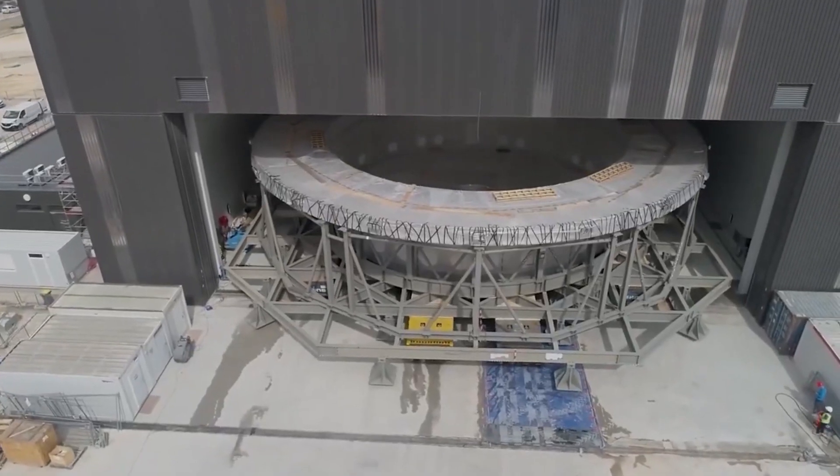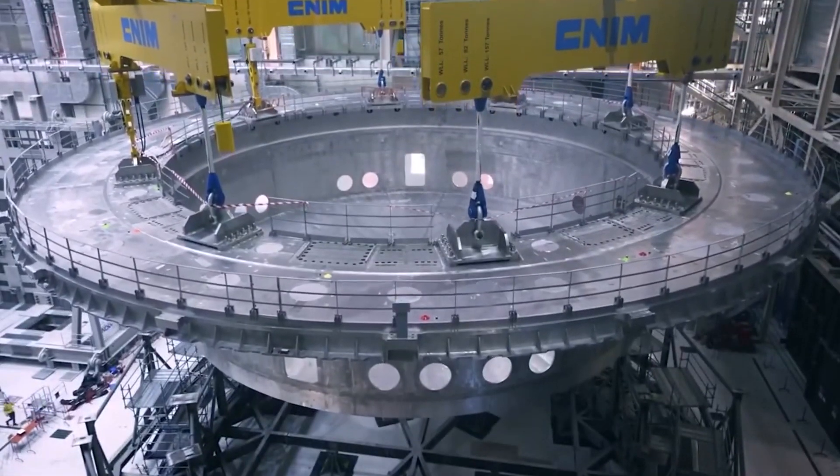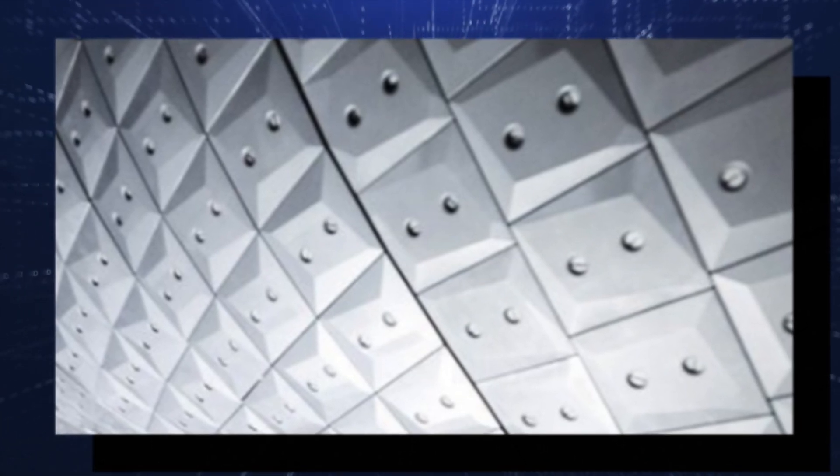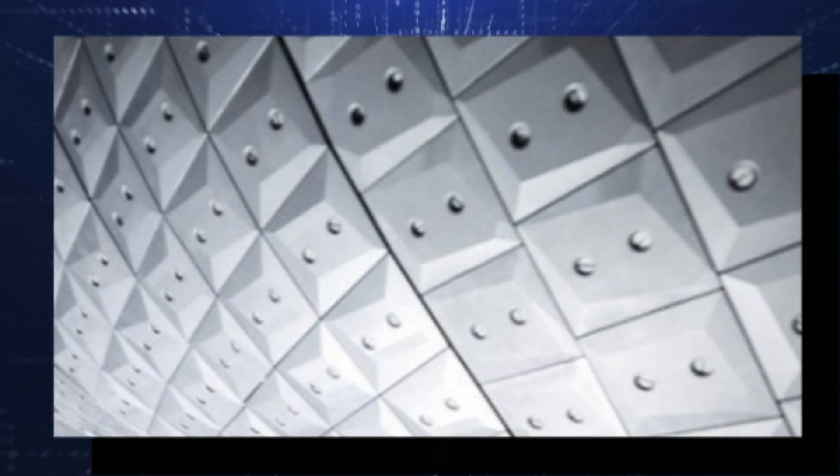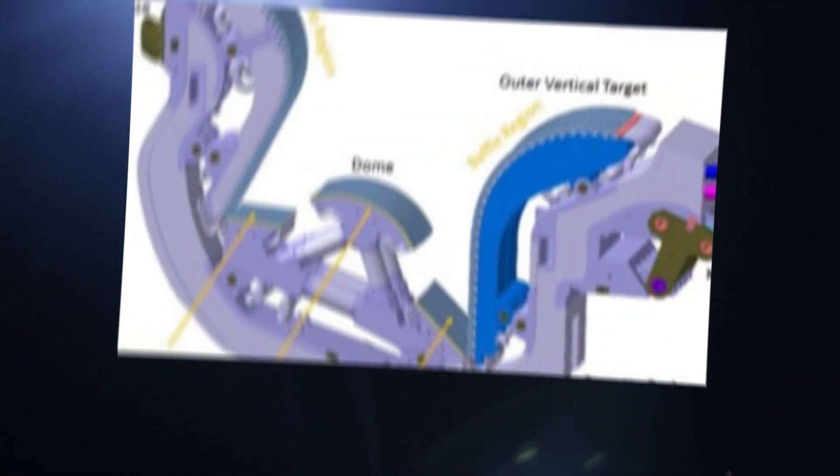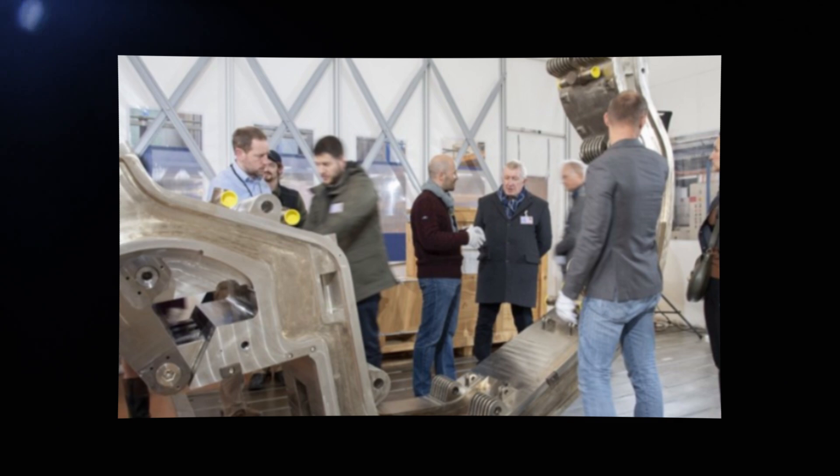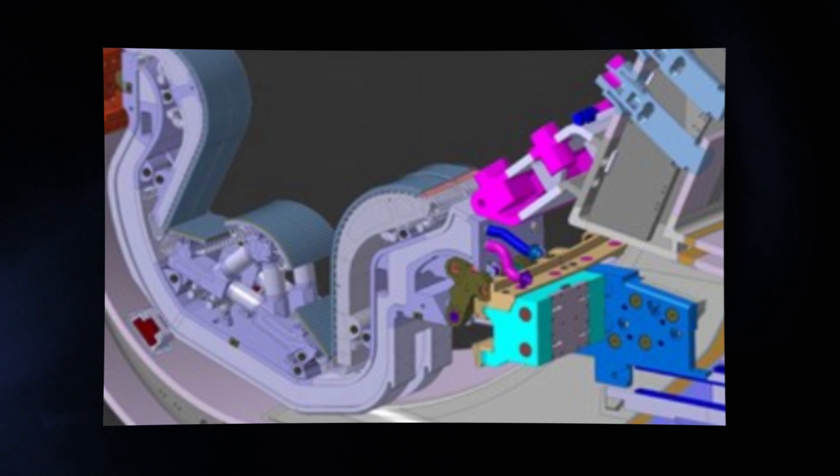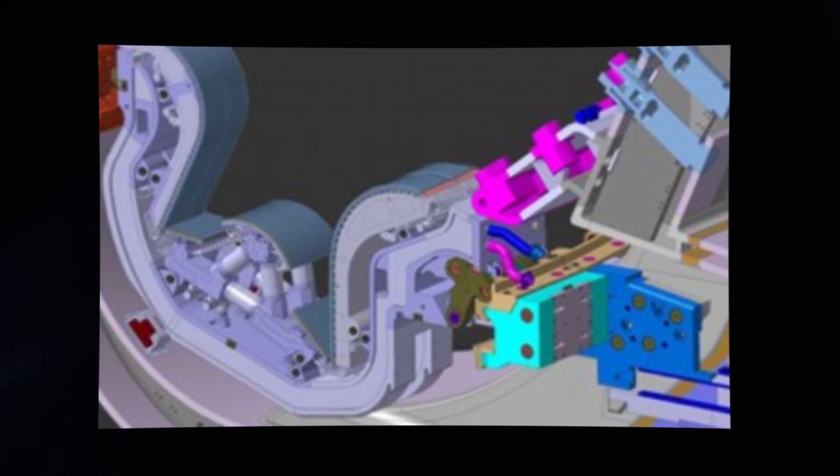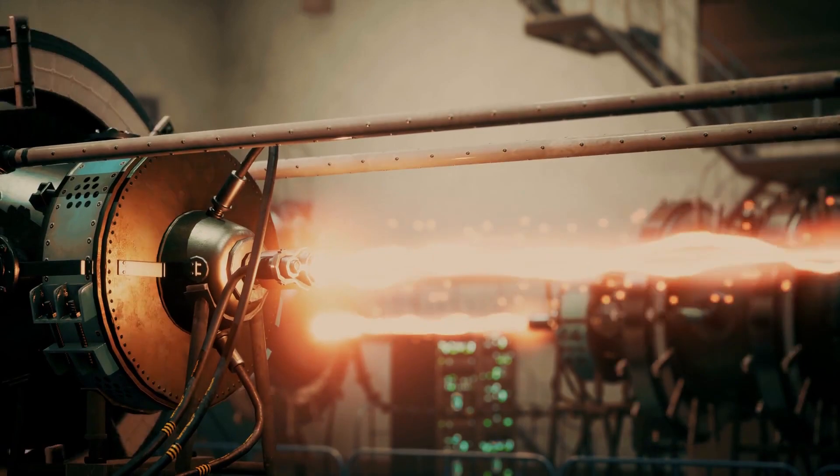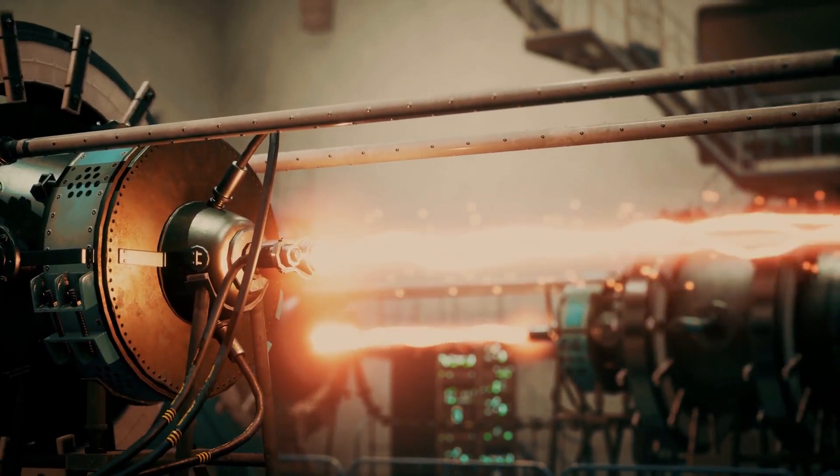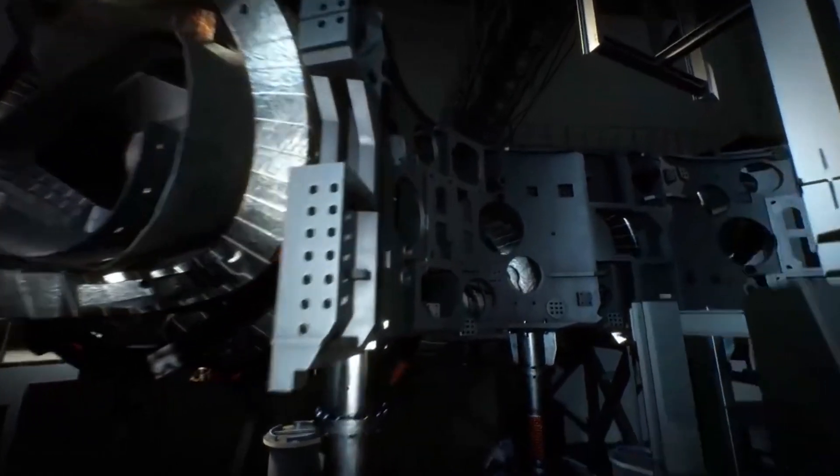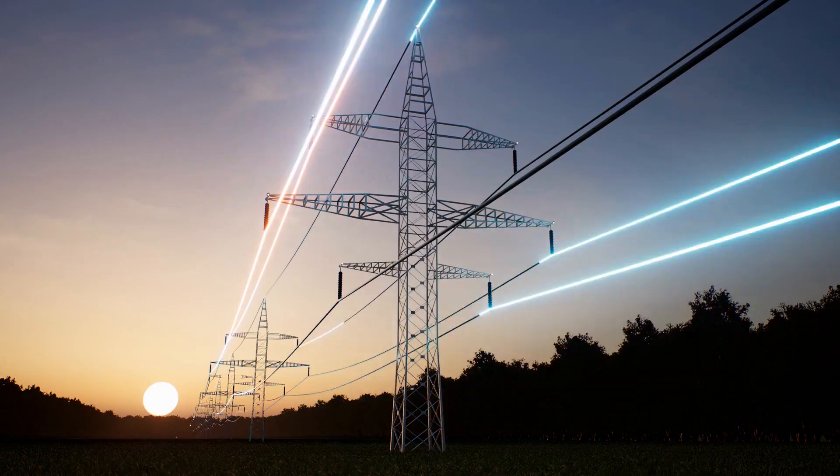Now, envision the Wendelstein 7X, the stellarator, enhanced with graphite tiles on its internal wall. This innovation elevates temperatures within, pushing the boundaries of what's achievable. The internal lining, aptly named a diverter, not only shields the twisting chamber walls, but empowers operators. It allows for the injection of plasma at higher temperatures, offering precise control over hydrogen plasma density and purity.